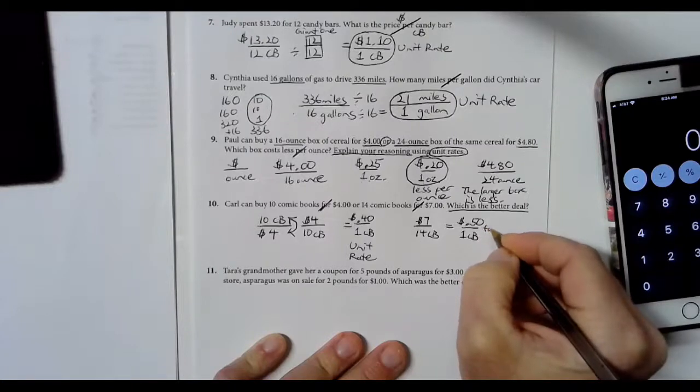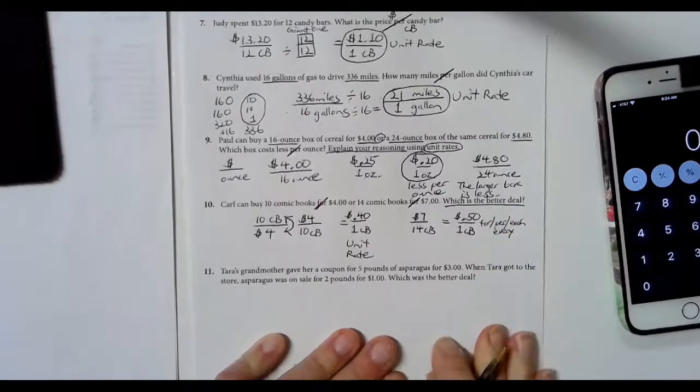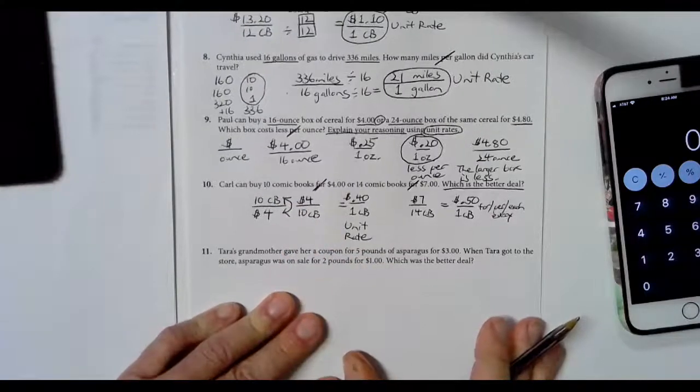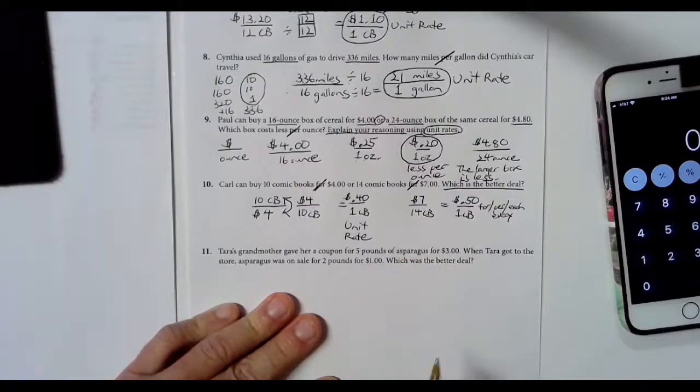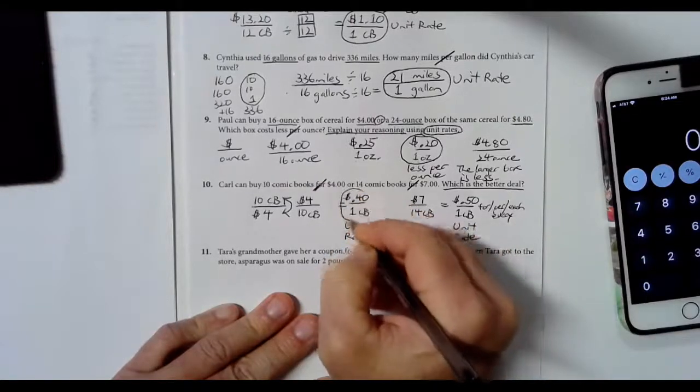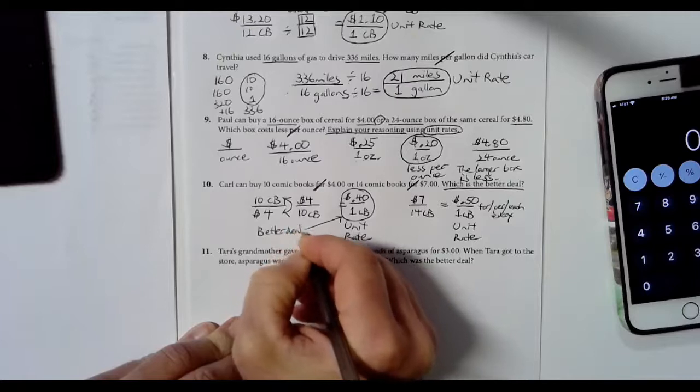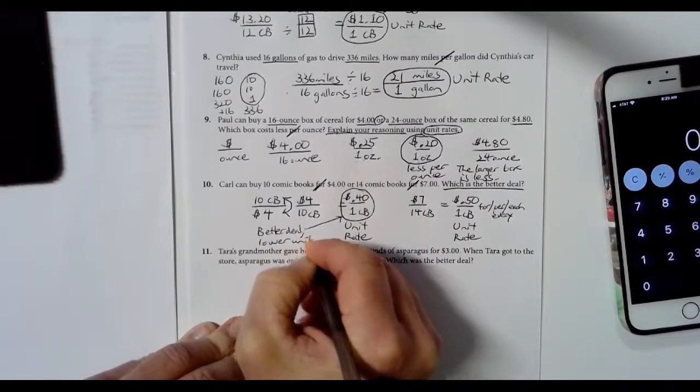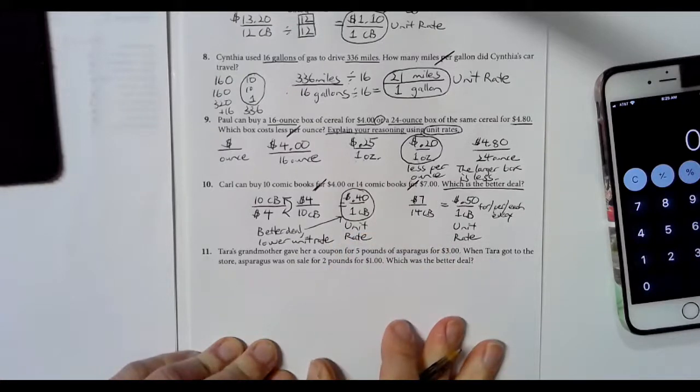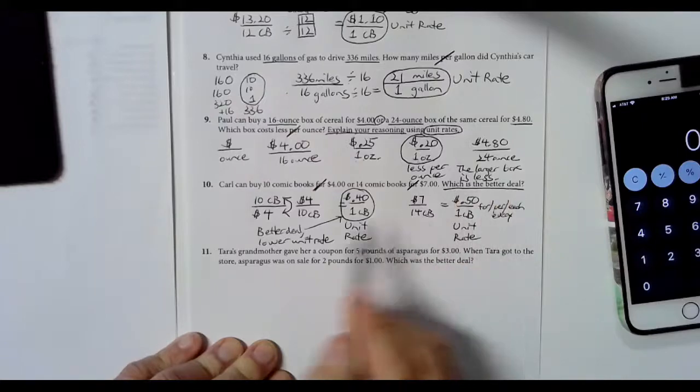$7 divided by 14, 50 cents each one. So we have the fraction bar means for, per, each, every. Those are all keywords we're looking for when you read problems. Tells you where to put the fraction bar. And you can definitely switch top to bottom like I just did there, as long as you do it for whatever you're comparing. That's the unit rate. The better deal. Better deal means lower unit rate.